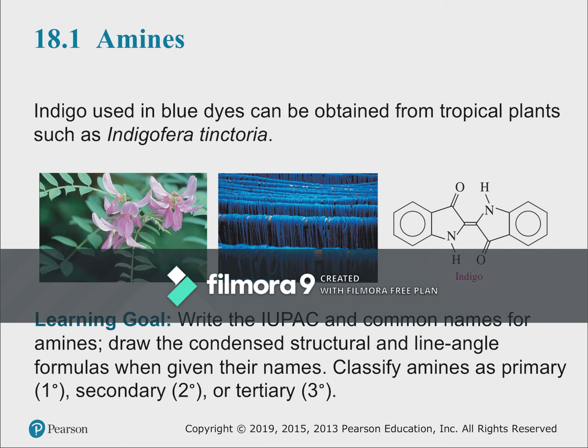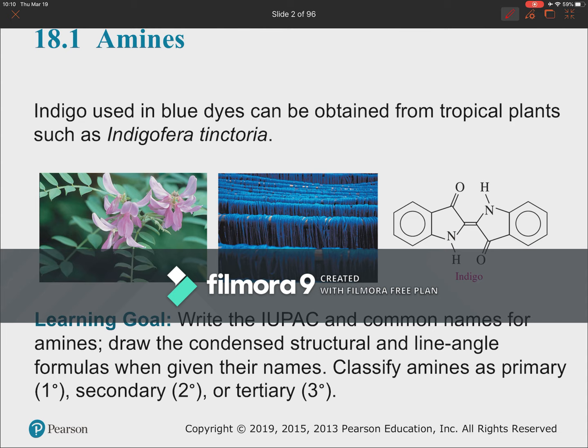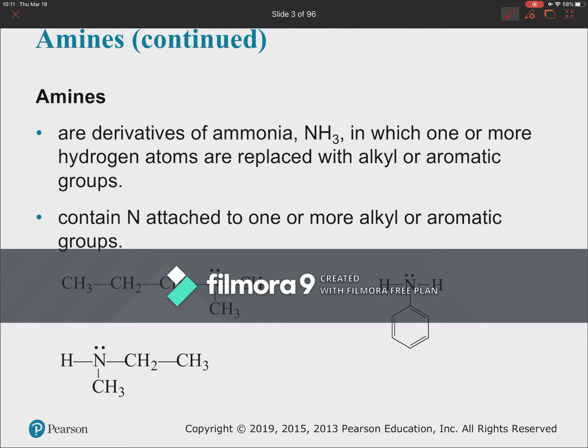You can tell an amide by the C double-bond O with an N on it. If there's no oxygen, these are derivatives of amines. That N attached to a C double-bonded to something else is pretty characteristic. Amines are derivatives of ammonia (NH3) where the hydrogens are replaced by alkyl groups, and the nitrogens have lone pair electrons.